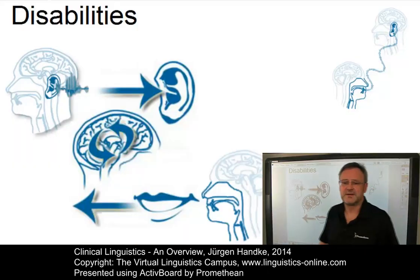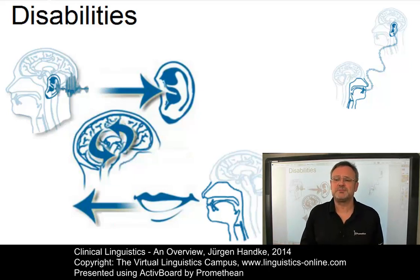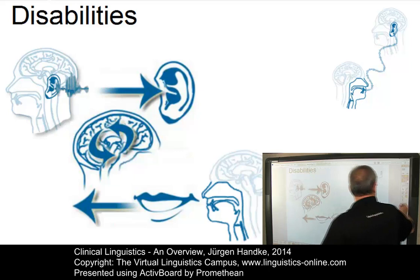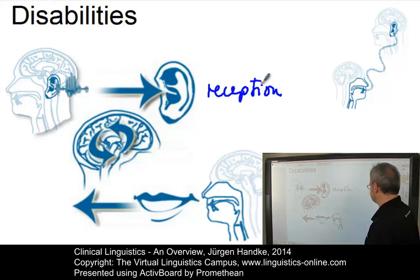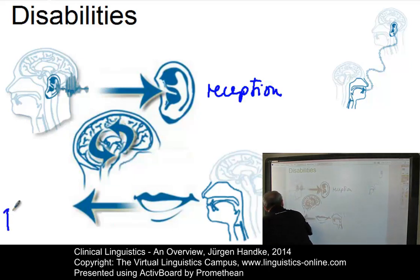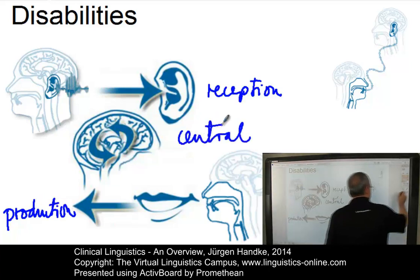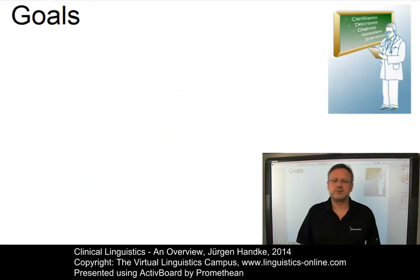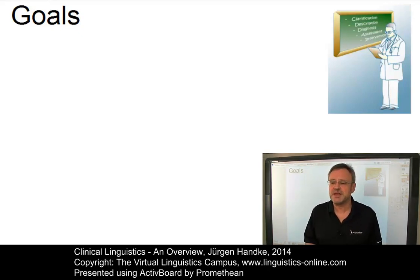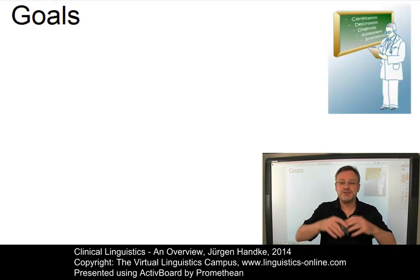As a starting point, we will use the classification based on the framework provided by the communication chain, in which three different kinds of abnormal language behaviour can be identified. The auditory level can be associated with the so-called reception disabilities, the articulatory level with production disabilities, and the central disabilities can be associated with the brain as the mediator between speaking and hearing. The major goals of clinical linguistics are to identify linguistic problems and describe them systematically in order to provide a classification of the linguistic behaviour of a patient as part of the process of differential diagnosis.